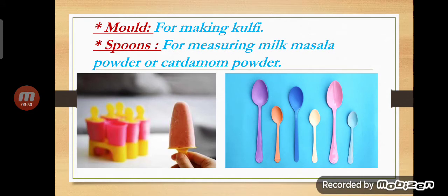The next object is a mold. If you want to make kulfi, you can use a mold. The next object is spoons. If you want to measure something for making milk products, we use spoons. Spoons are used for measuring milk, masala powder, or cardamom powder — in Hindi, cardamom is called elaichi powder.